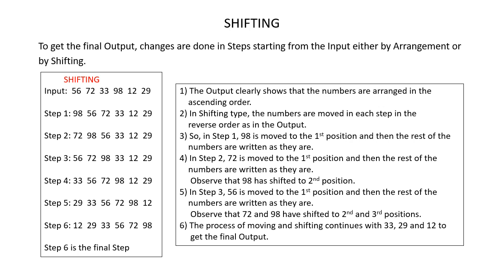Now when you observe the changes from the input to the output, you can clearly see that only one number is being rearranged in each step. In step 1, 98 is rearranged; in step 2, 72; in step 3, 56; and so on. So in each step only one number is being rearranged.